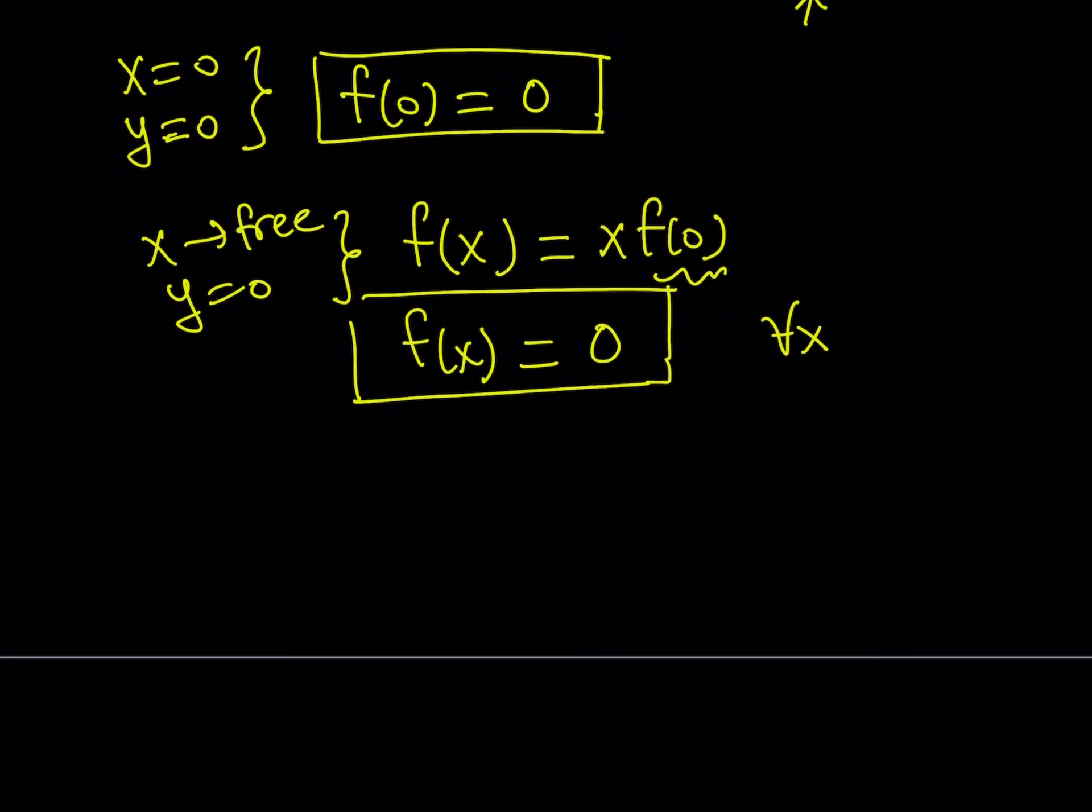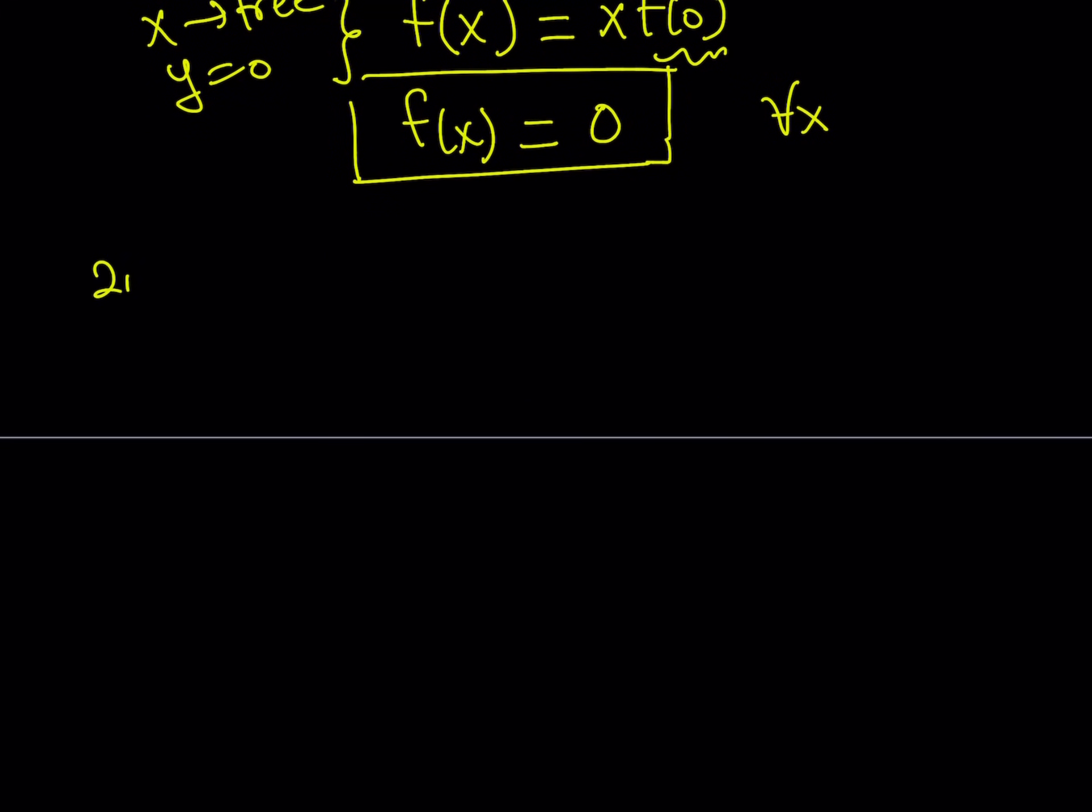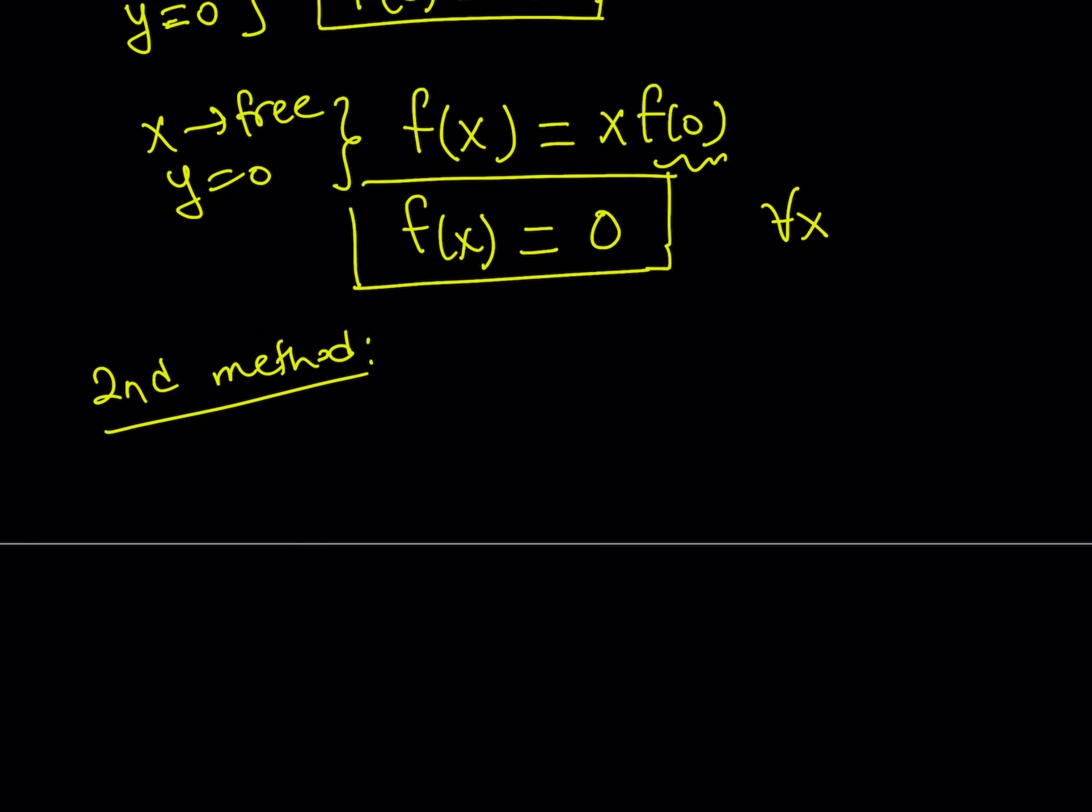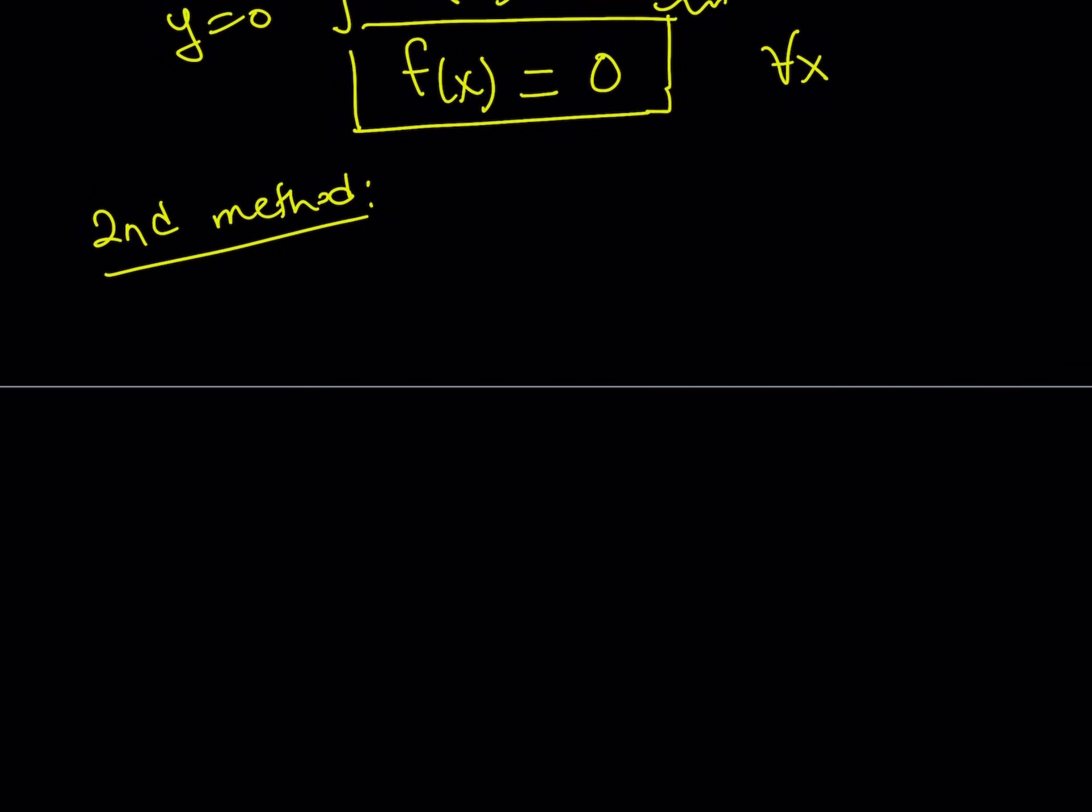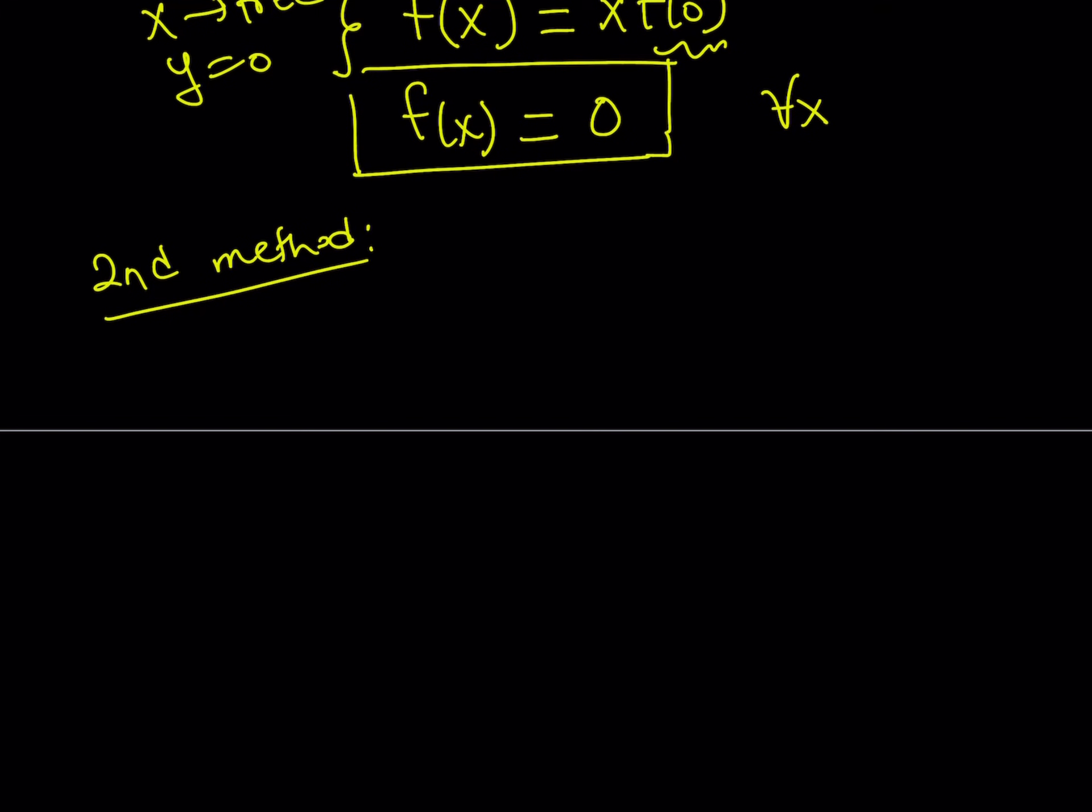Great. So let's go ahead and talk about the second method for the first problem. And then we'll solve the second problem. Now, the second method for this function involves the following. We're going to start. Actually, here's what we're going to do. We're going to reverse this process. So that's not completely considered like an entirely different method, but it's kind of a little different because of the process we use.